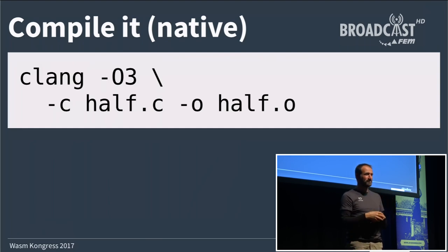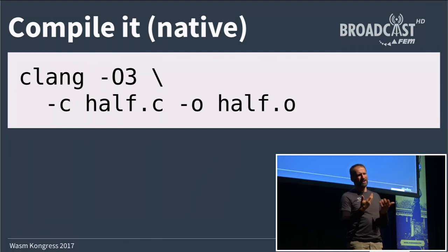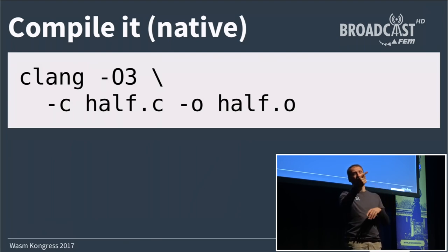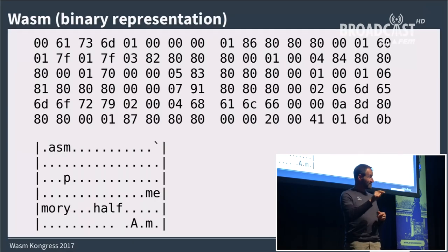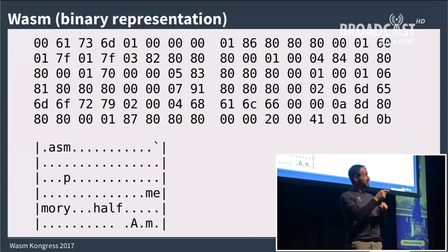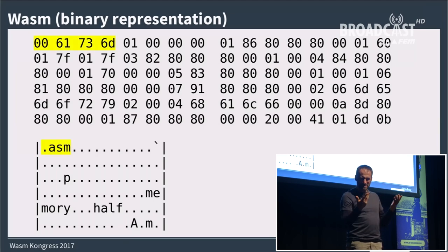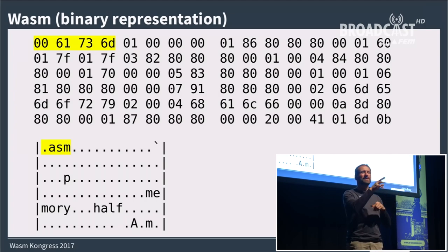In a native application you'd call your compiler — clang or gcc — pass some flags and get an object file that you can link into another application. If you want to do the same with WebAssembly, you call Emscripten, pass a few more flags, tell it to output a WebAssembly module, and out you get the binary representation of WebAssembly — this is what actually gets delivered to your browser.